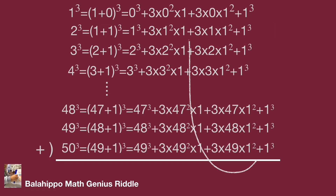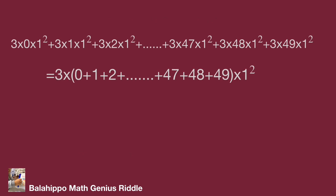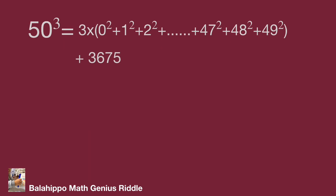Next, let's check the 3 times continuous number times 1 square sections. The sum of these items becomes 3 times bracket (0 plus 1 plus 2 plus dot dot dot plus 49) times 1 square. Using the formula for sum of continuous numbers for 0 plus 1 plus 2 plus dot dot dot to 49, we get bracket (1 plus 49) bracket times 49 over 2. Calculating the value, we have 3 times 1225 equals 3675. Put 3675 into the right side of the equations.